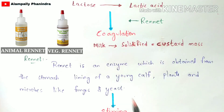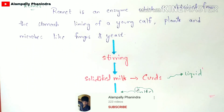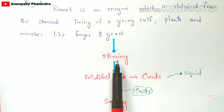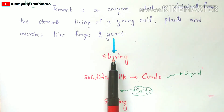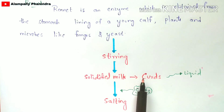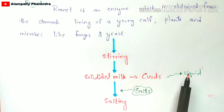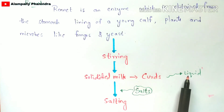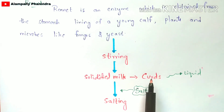After coagulation, the custard mass that has been formed should be stirred continuously — stirring meaning mixing. When you mix that solidified milk continuously, the solidified milk gets converted into curds. After the formation of curds, some liquid molecules present in the curds get released out and are removed. After removal of this liquid, the curds are obtained.